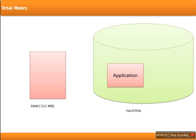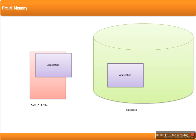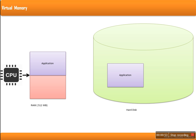CPU can execute instructions which are available in memory. CPU actually doesn't interact directly with the hard disk, because if a CPU were to interact directly with hard disk, it will cause a lot of delay. So whenever we execute any application — when we double click on any software installed in our machine — that program or software will be loaded in RAM, and then CPU starts executing instructions of that application.